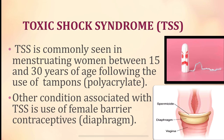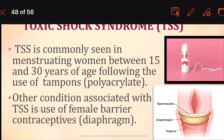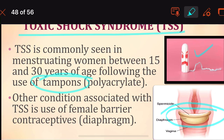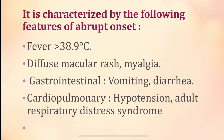Moving on to toxic shock syndrome (TSS). It is commonly seen in menstruating women between 15 and 30 years of age, occurring following the use of polyacrylate tampons. Other associated conditions include the use of female barrier contraceptives such as the diaphragm — the two main causes are tampons and the diaphragm.